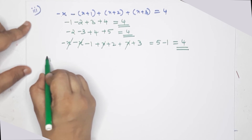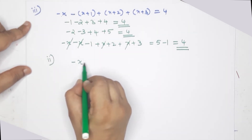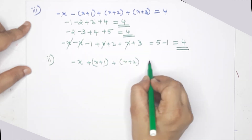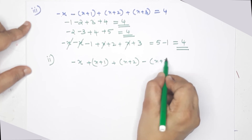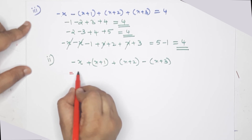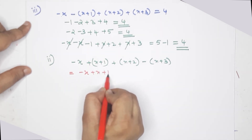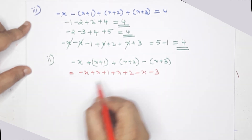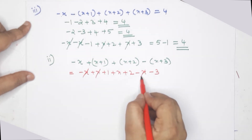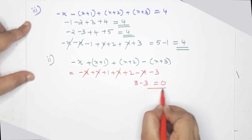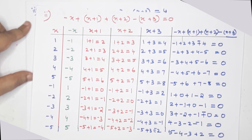This is the second question: minus x plus x plus 1 plus x plus 2 minus x plus 3. The third question, distributing: this is minus x, plus x, plus 1, plus x, plus 2, minus x, minus 3. This simplifies to 3 minus 3, which is equal to 0. So we have 0 in the answer.